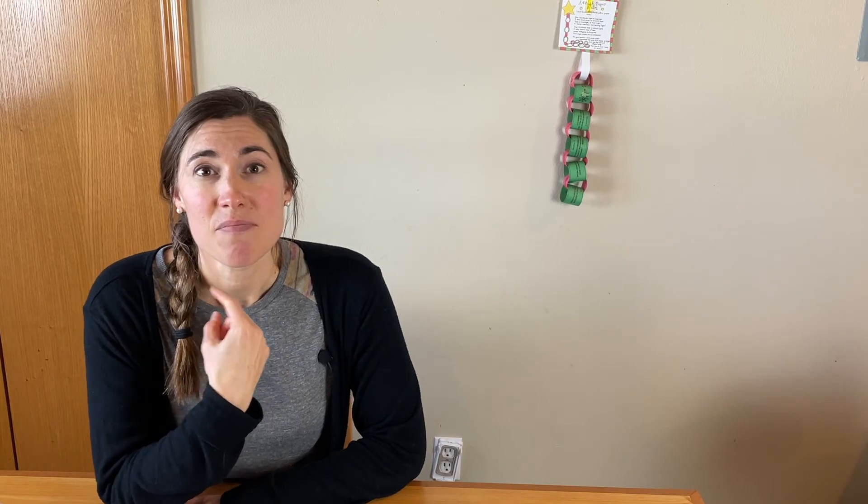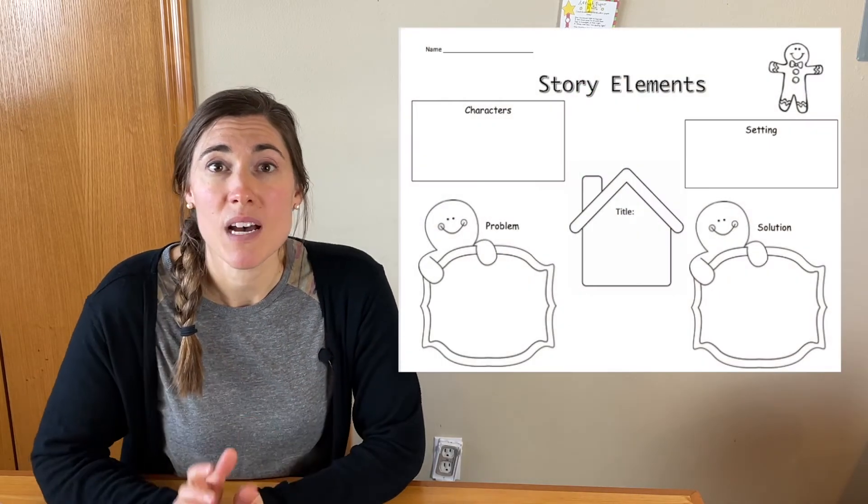You could also give them the story elements chart where they come up with their own version of the gingerbread man — character, setting, problem, and solution — and use that to transfer over to writing paper as their own story. A fun thing to end lessons with is an author's chair, because students love to share what they've written. You could have different students share, or if you're homeschooling, just have your child read you their story. If you've got extra time, they can illustrate their story on a little piece of paper.